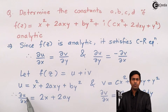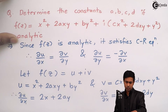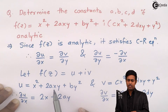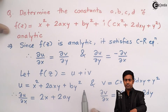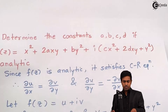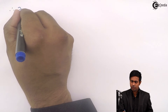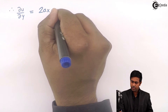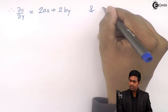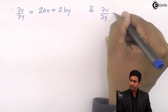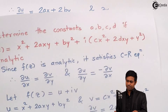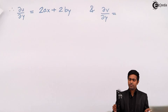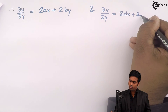Now let us differentiate u with respect to y. We get ∂u/∂y = 2ax + 2by. Similarly, the partial differentiation of v with respect to y is ∂v/∂y = 2dx + 2y.